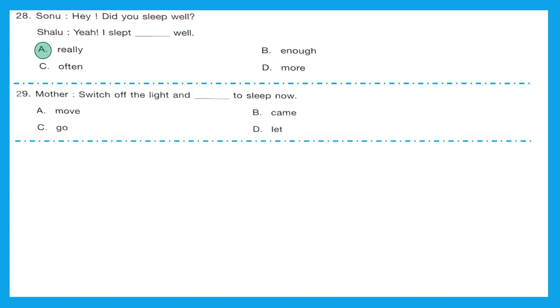Question 29, Mother: Switch off the light and dash to sleep now. Here we have to use the verb. But which form of verb? When we say there is a 'to' after the verb, generally we use base form of verb. Move to sleep now, came to sleep now, go to sleep now, or let to sleep now? The right answer should be option C, go to sleep now.